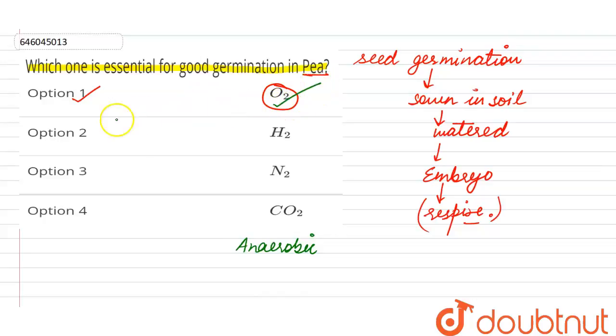So one of the most important requirements for this will be the presence of oxygen. While presence of hydrogen, nitrogen, or carbon dioxide gases is not needed because these are not used up by the embryo. So the only right answer for this question here becomes Option 1, that is oxygen is the one which is associated with the process.